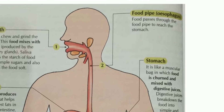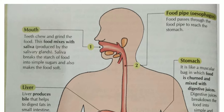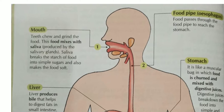One interesting thing about our digestive system: if this food canal is stretched out, if we open the whole food canal from mouth to anus, it will be about 10 meters long. So let's start with the first part of our digestive system — the mouth.